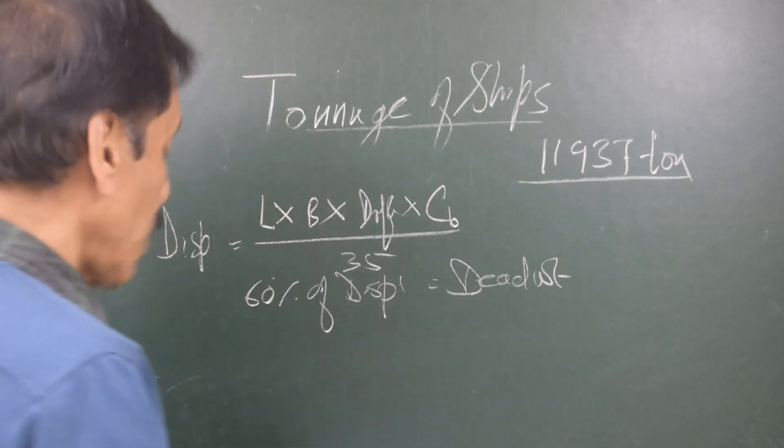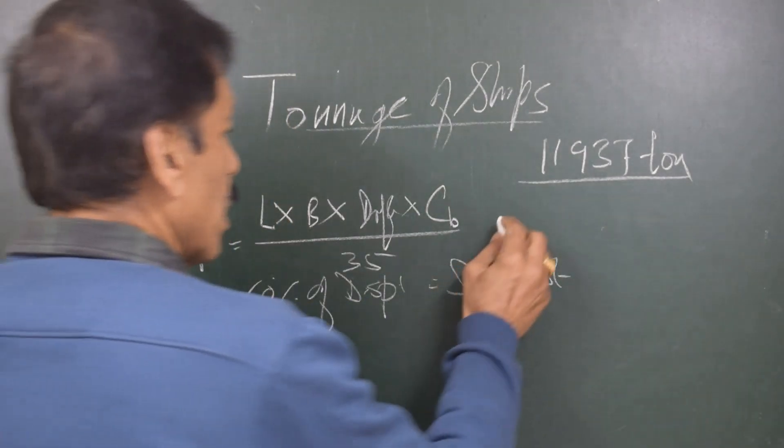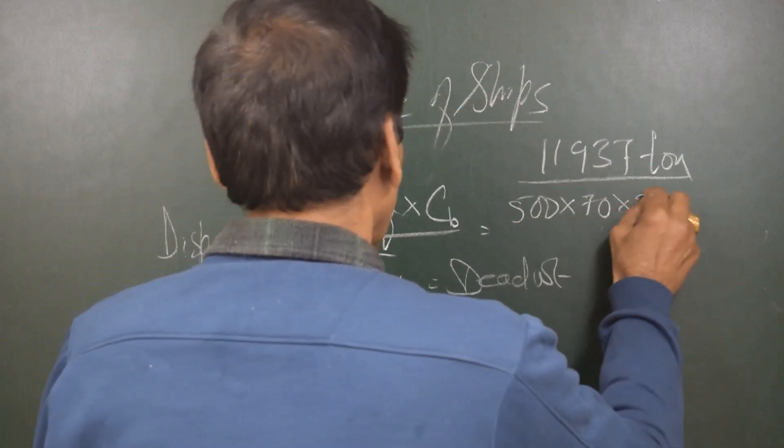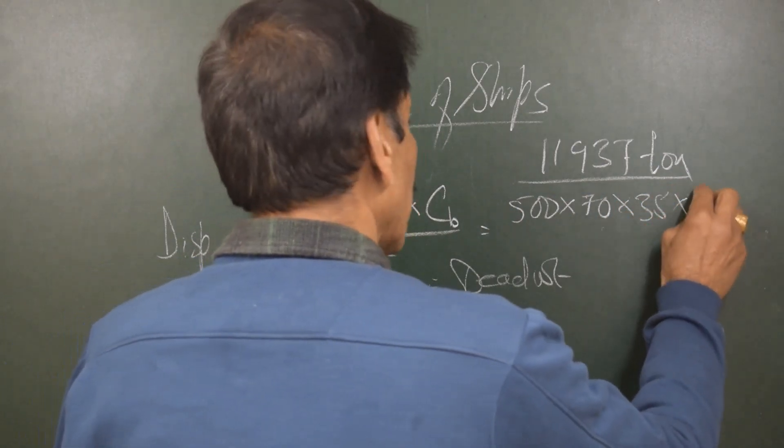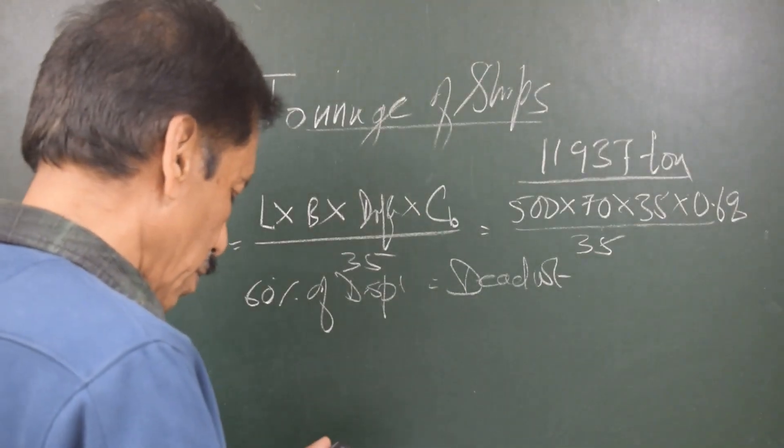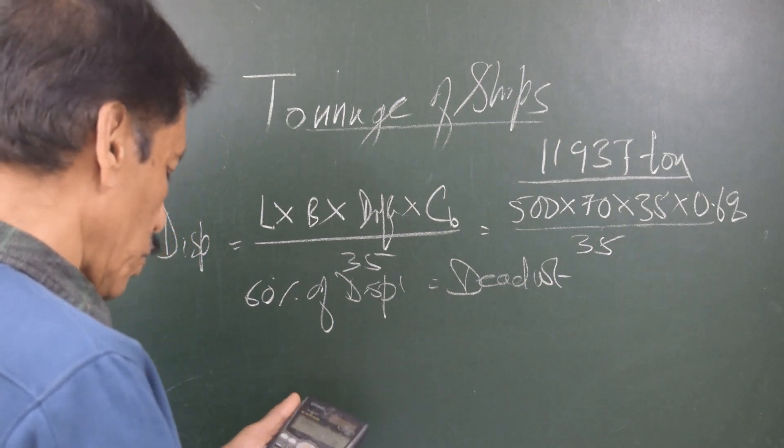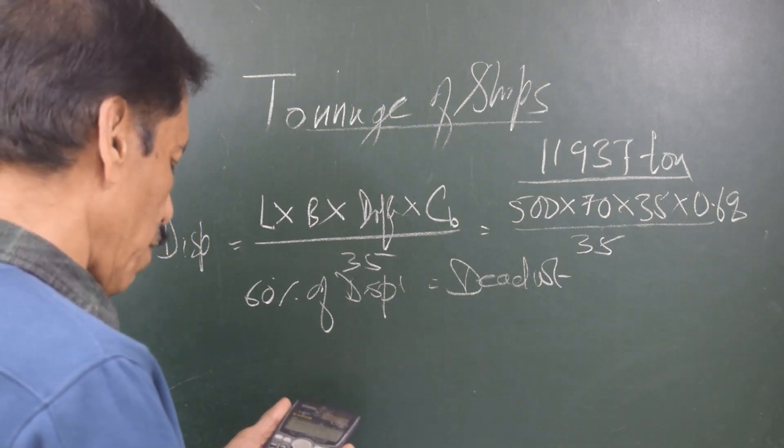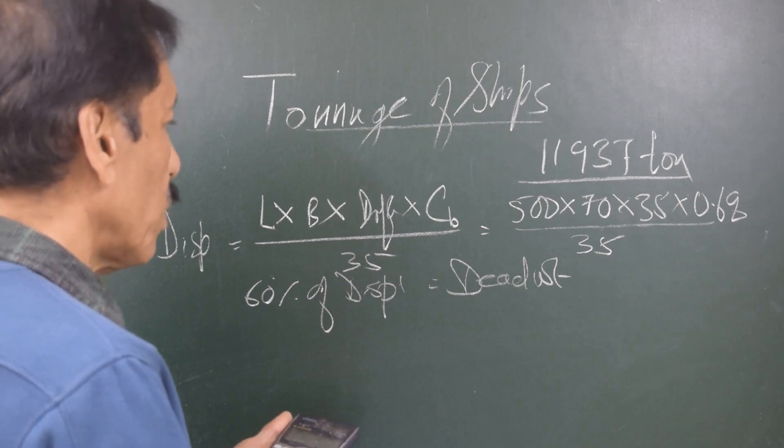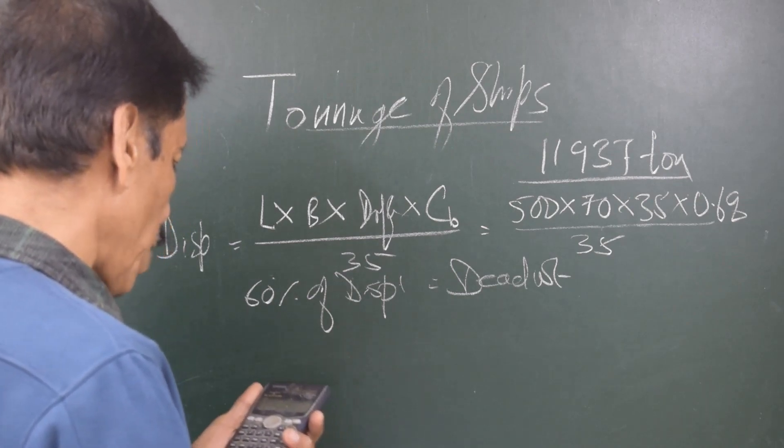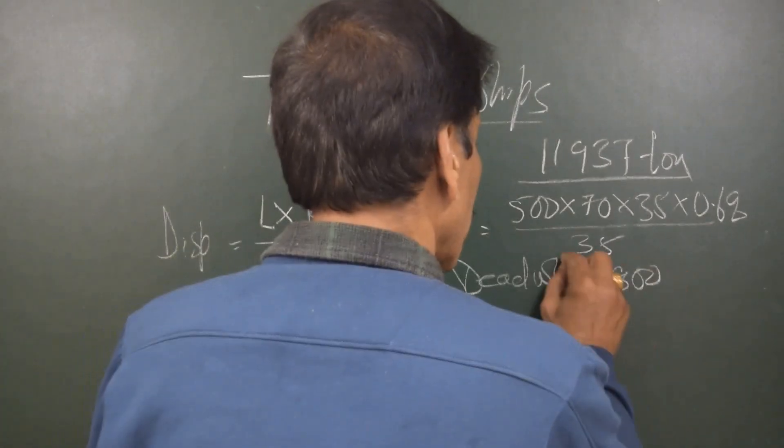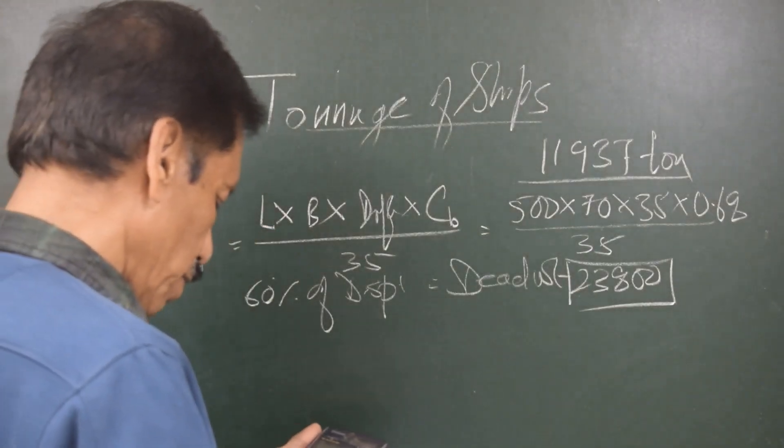So let us see for the same dimensions that we used, that is 500 as the ship's length multiplied by 70 multiplied by 35. Let's say, let's take the block coefficient as 0.68, and the whole thing divide by 35. So displacement I'm getting is 23,800. 23,800 the displacement, and what is 60% of this? 0.6, so that's 14,280.